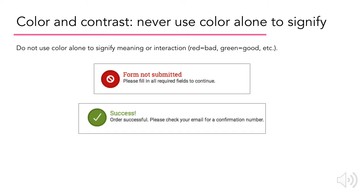There is a way to use red and green as part of your product's color palette without disabling users with color blindness. The rule of thumb is to never use color alone to signify a message, because not everyone is able to see the same colors the same way. But as long as other cues — such as icons, distinct headings, and clear written messages — accompany the colors, then we are not disabling colorblind users.